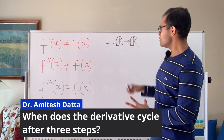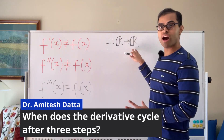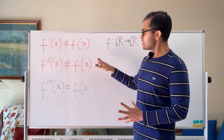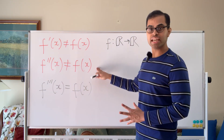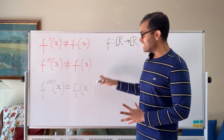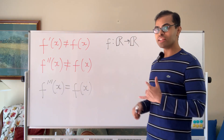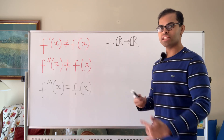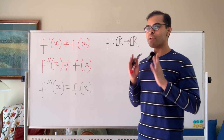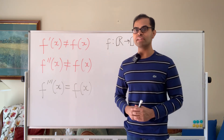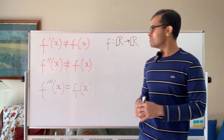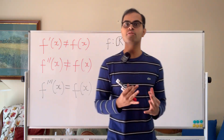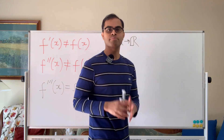We're looking for a three times differentiable function f from R to R, so that f is not equal to its first derivative, not equal to its second derivative, but equal to its third derivative. In other words, it cycles after three times if we keep differentiating the function, and we're going to use complex numbers to find it. It's super beautiful — even though it's a function from R to R, we're going to dive into the world of complex numbers.